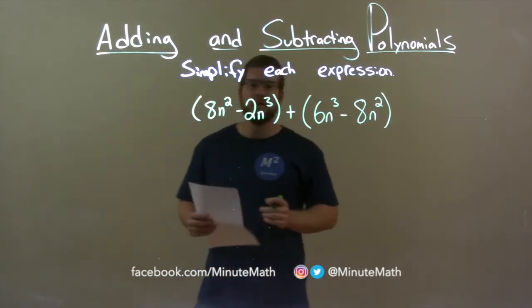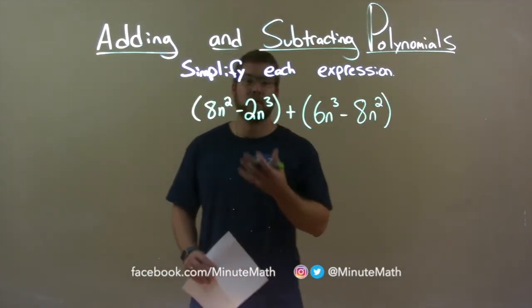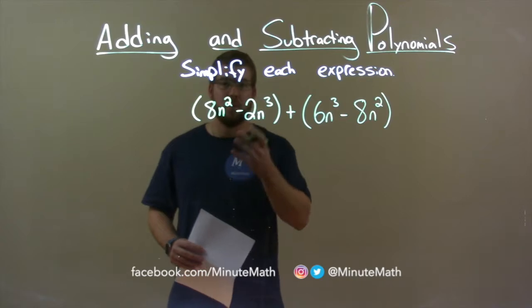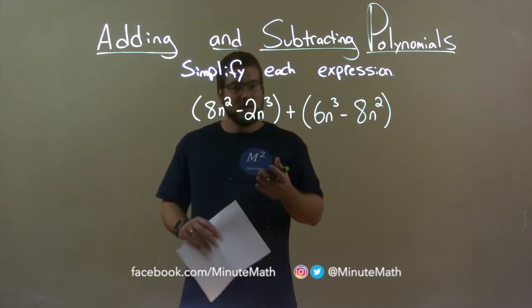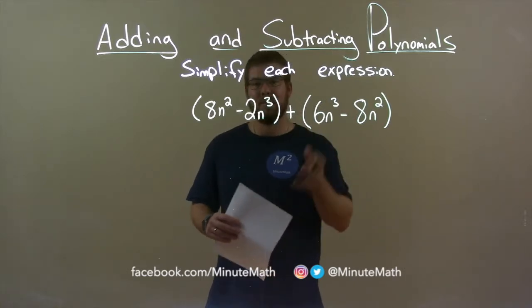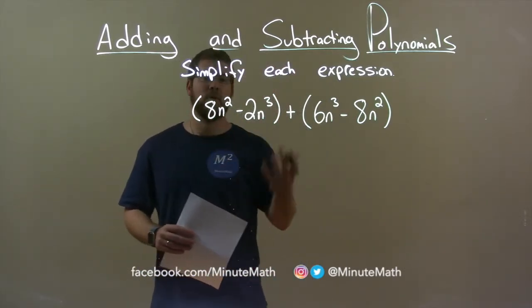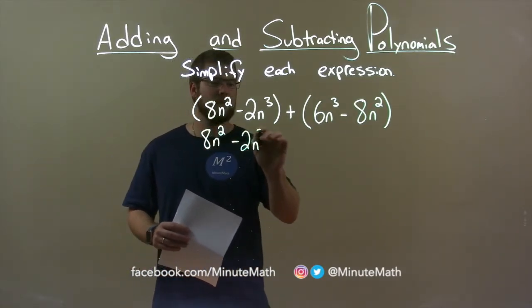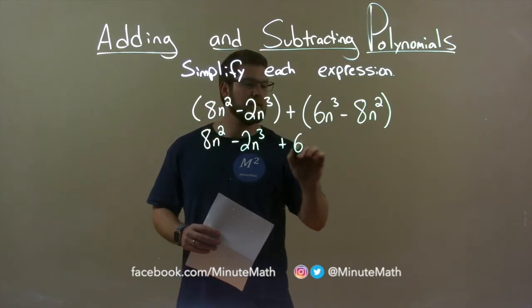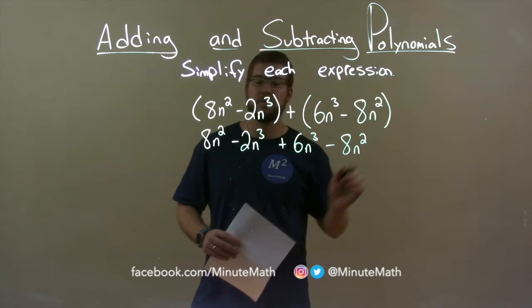Okay, so now let's simplify this. Well, within each parenthesis there's nothing that's a like term, so I can't simplify within the parenthesis. We have a plus sign in between and really that doesn't change anything within the parenthesis. So, what I can do now is rewrite this without the parenthesis: 8n squared minus 2n to the third plus 6n to the third minus 8n squared.